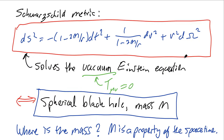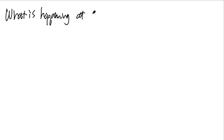Let me begin by making a few simple observations. We're considering the spacetime described by this metric for all values of the areal radius r. We need to worry about what happens when r equals either 2m or 0. When r equals 2m, the g_tt metric component vanishes while g_rr goes to infinity. When r equals 0, g_rr goes to infinity and g_tt vanishes.